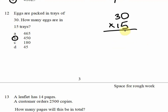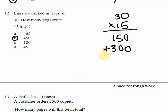You could also do this digit by digit. Starting with 5: 5 times 0 is 0, 5 times 3 is 15. Then with 1: 1 times 0 is 0, use 0 as a placeholder, 1 times 3 is 3. Adding up: 0 plus 0 is 0, 0 plus 5 is 5, 3 plus 1 is 4. Either way you get the same answer: 450.